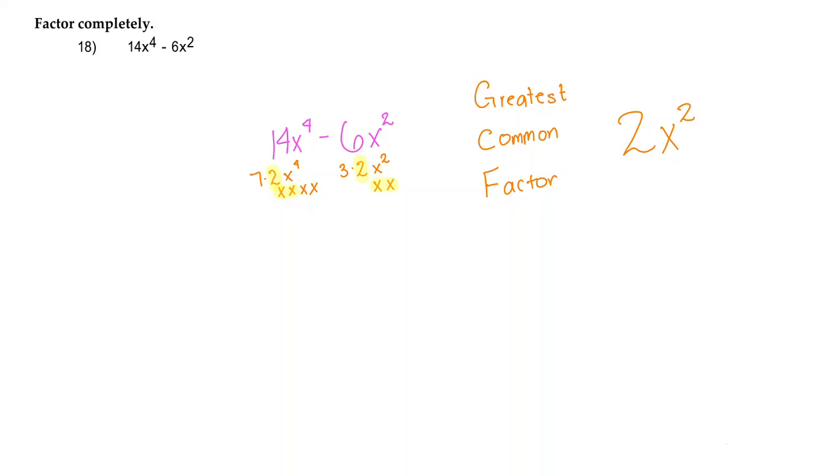So what we're going to do with that greatest common factor is we're going to pull it out of this whole binomial. So I'm going to write 2x squared on the outside, and then I'm going to write a bubble. And on the inside, it's going to be what's left of the equation after I take out 2x squared from each term.